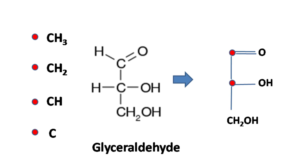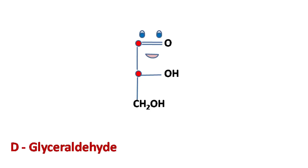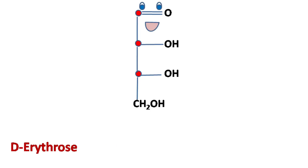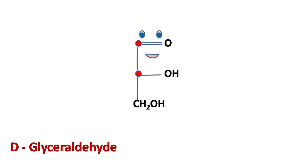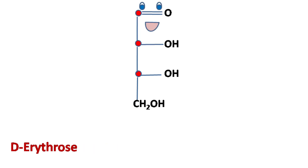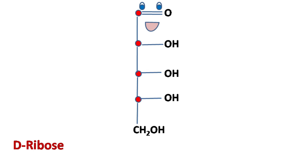So this is how the structure of glyceraldehyde will look like. Adding one more carbon atom to glyceraldehyde gives erythrose. And adding one more to erythrose gives ribose.